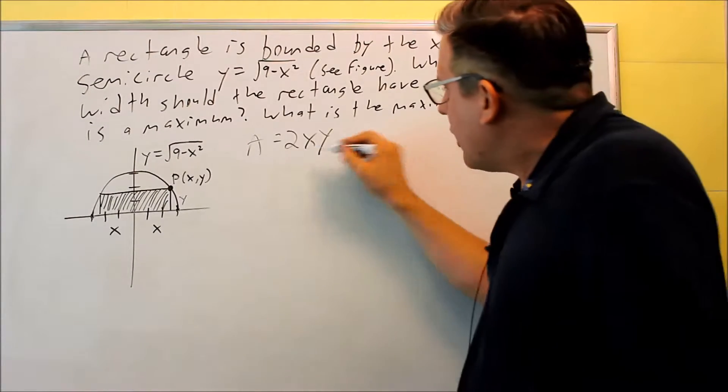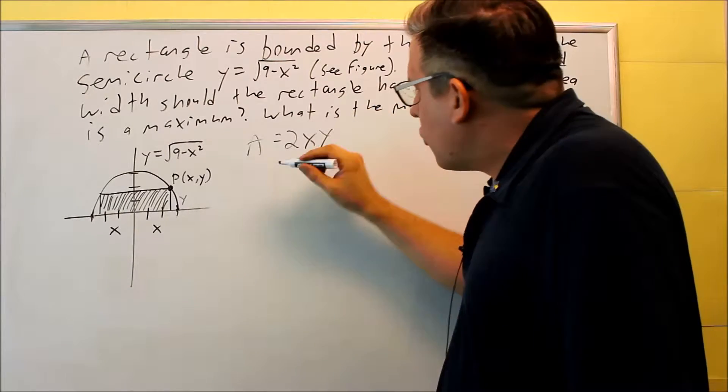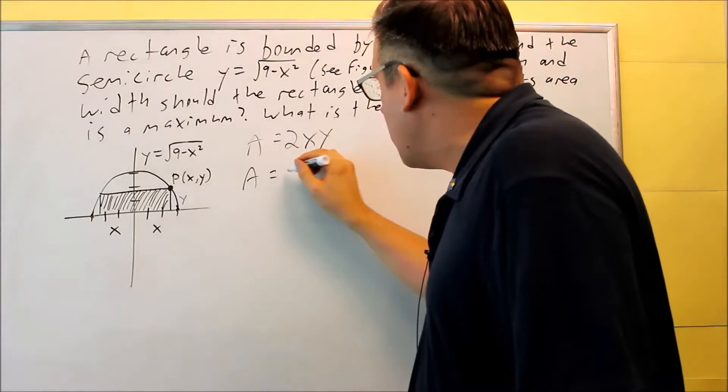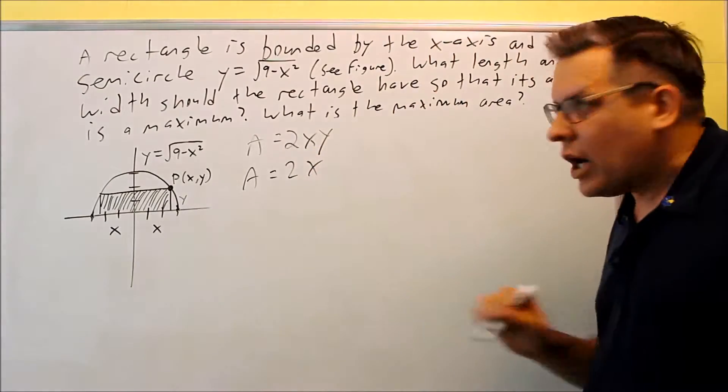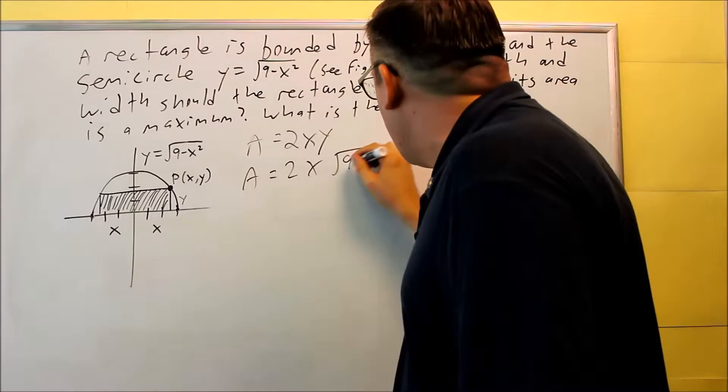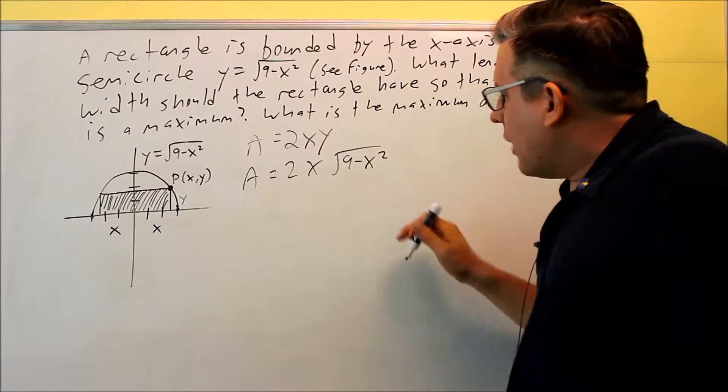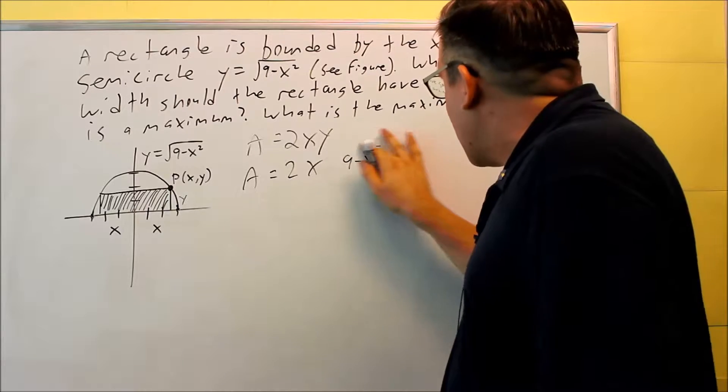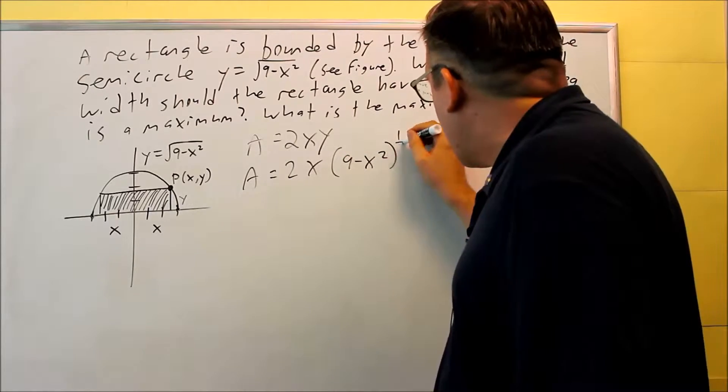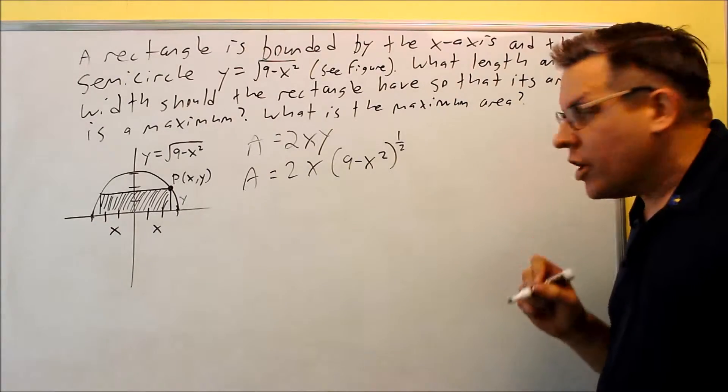What we're going to do is we need to get this down to one variable, when we take the derivative, it's going to be easier with one variable only. So for this, you're going to do a substitution, take out the y, replace it with the equation that goes with it, square root of 9 minus x squared. And in fact, what I'm going to do here, because I have to do a derivative, I'm going to automatically just write this as 9 minus x squared to the 1 half to make it easier when I do chain rule.